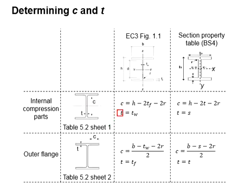The t here represents the t of the web. As for the c here, it means b minus thickness of the flange minus 2 radius and divided by 2.